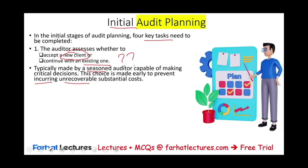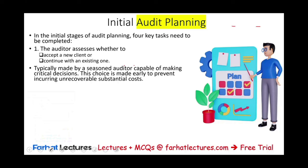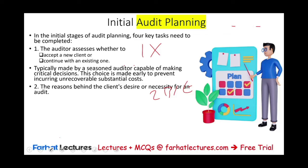The choice is made early to prevent unrecoverable substantial costs, which could be in the form of reputation. You don't want to associate yourself or your firm with a client that does not have integrity. Also, you want to accept a client for many years. In year one there's not much profit because you're learning about the client and doing setup work. Year two you might break even, and years three and four is where auditors start to make more money. The first year you become more efficient the longer you audit them.